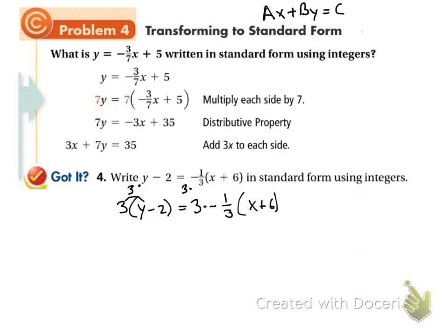On the left, I'm going to distribute in. 3 times y is 3y. 3 times negative 2 is negative 6 equals. I can rewrite 3 as 3 over 1 because it's easier to multiply fractions. This is a positive times a negative, so this is going to be negative. 3 times 1 on the top will give me 3 over 3 times 1 on the bottom will give me 3. Well, 3 over 3 is the same thing as 1, right? Anything over itself is 1. So this is negative 1. We've still got our parentheses. I'm going to leave the left alone and distribute in my negative 1. Negative 1 times x is negative x. Negative 1 times 6 is negative 6.